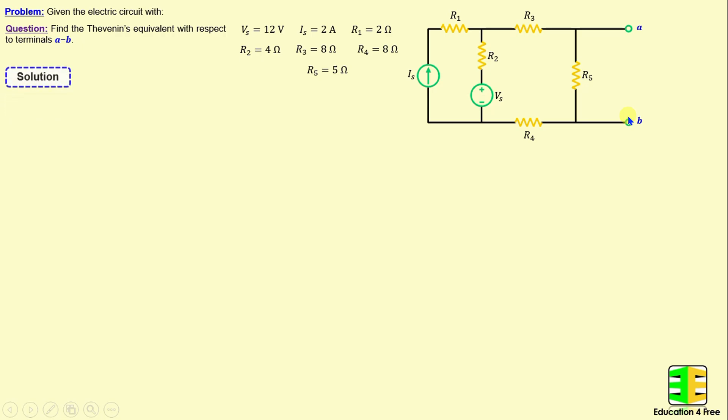Let's move on to the solution. By applying Thevenin's Theorem between terminals A and B, we can replace this circuit with a voltage source in series with the resistor, which will be denoted as VTH and RTH.